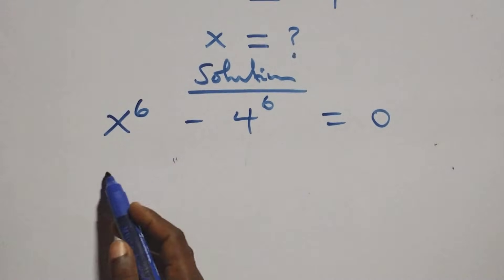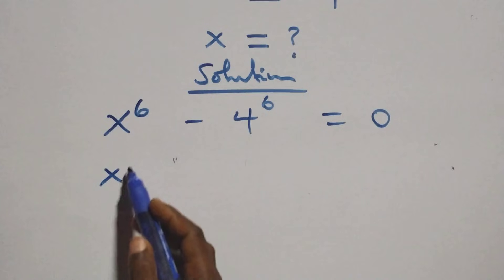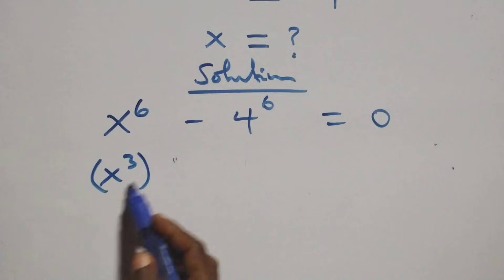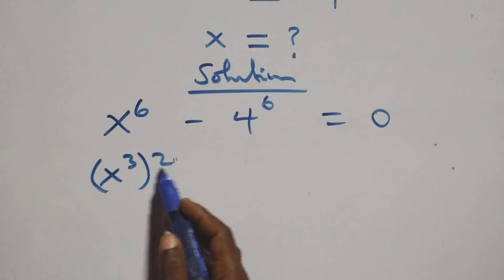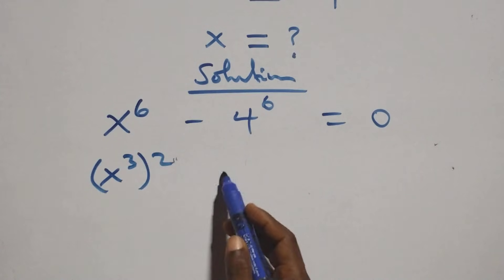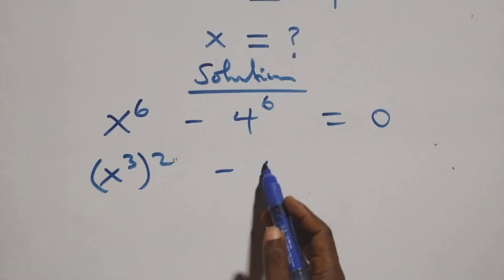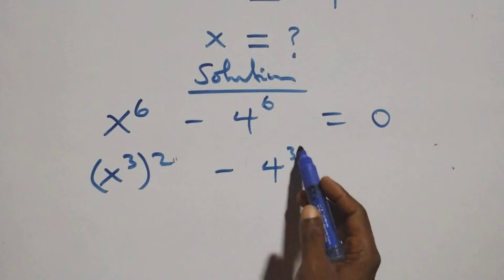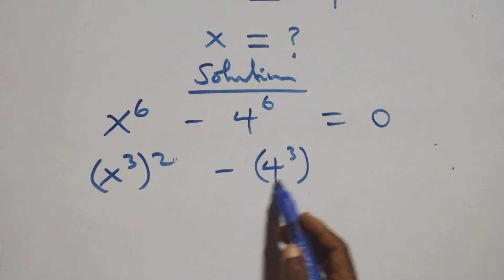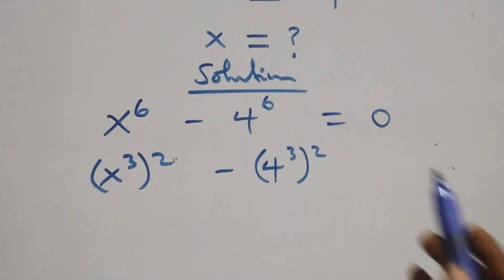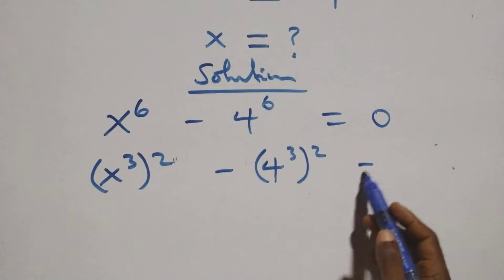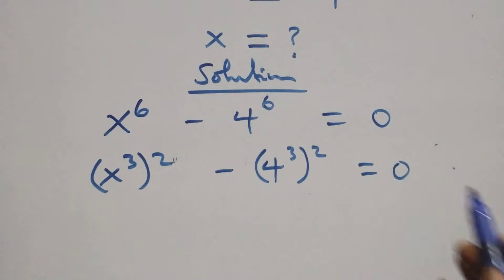The next step: we can write it as x raised to power 3 squared — since 2 times 3 gives 6 — minus 4 raised to power 3, all squared, equals to 0.